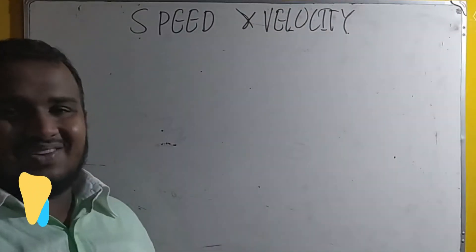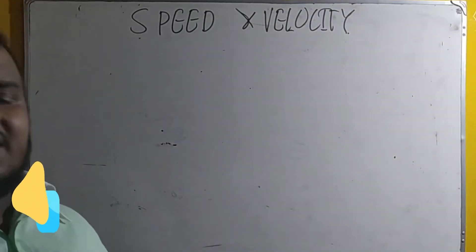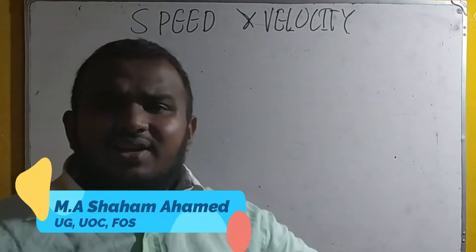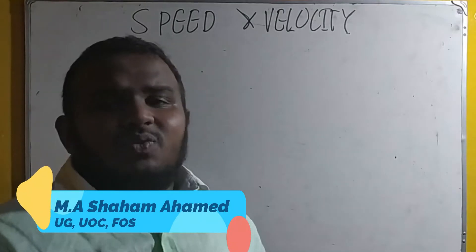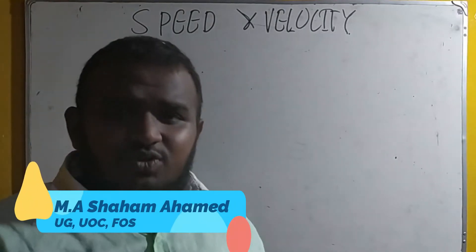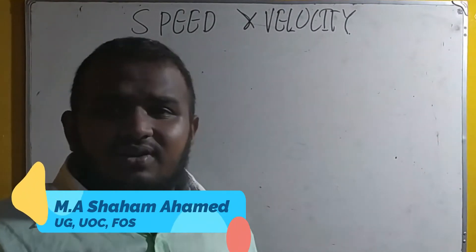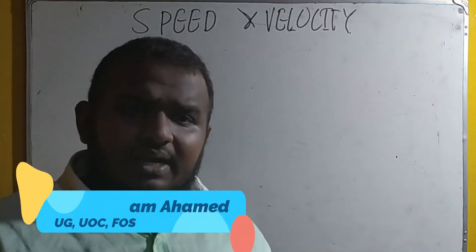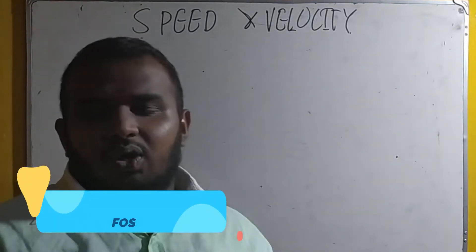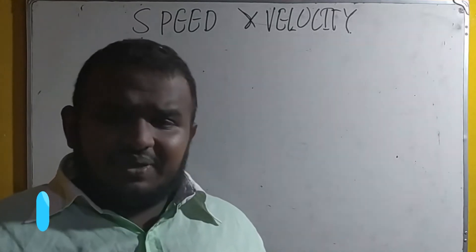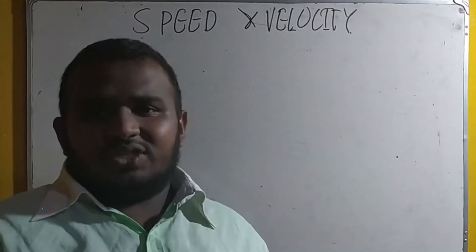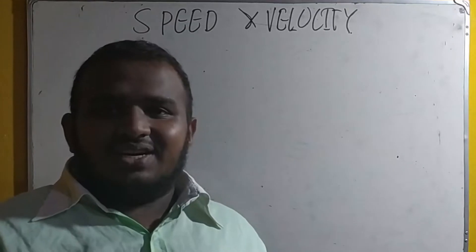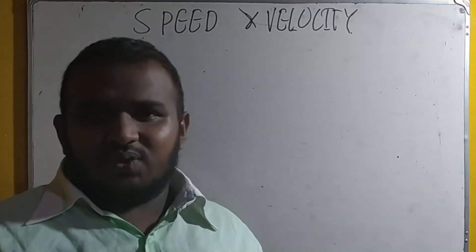So now I am going to study about speed and velocity. Speed is a typical word what we use in our day to day life. Whenever you travel in a vehicle, you say to your father, go faster. That is a very typical word what we use. But sometimes the term velocity is new for you all. However, speed and velocity are two quantities to measure how quick an object is moving.